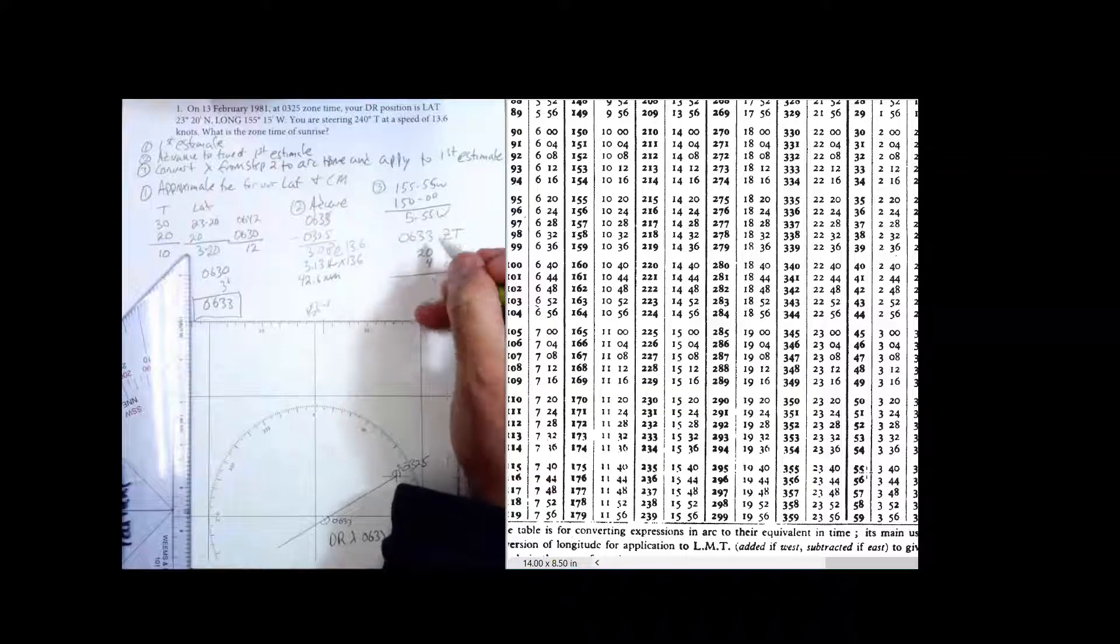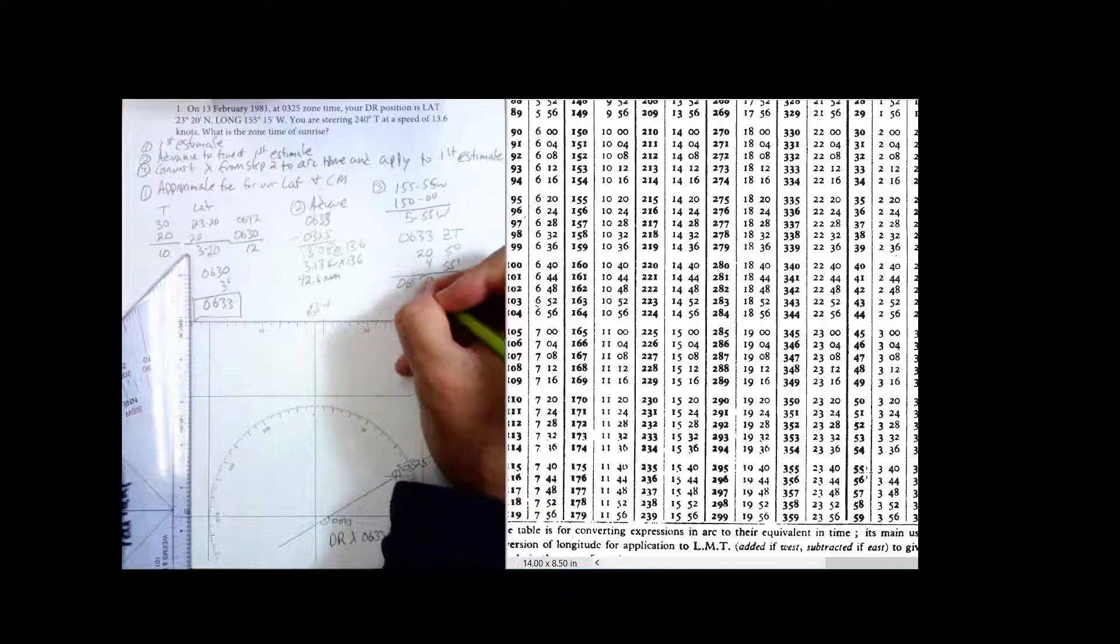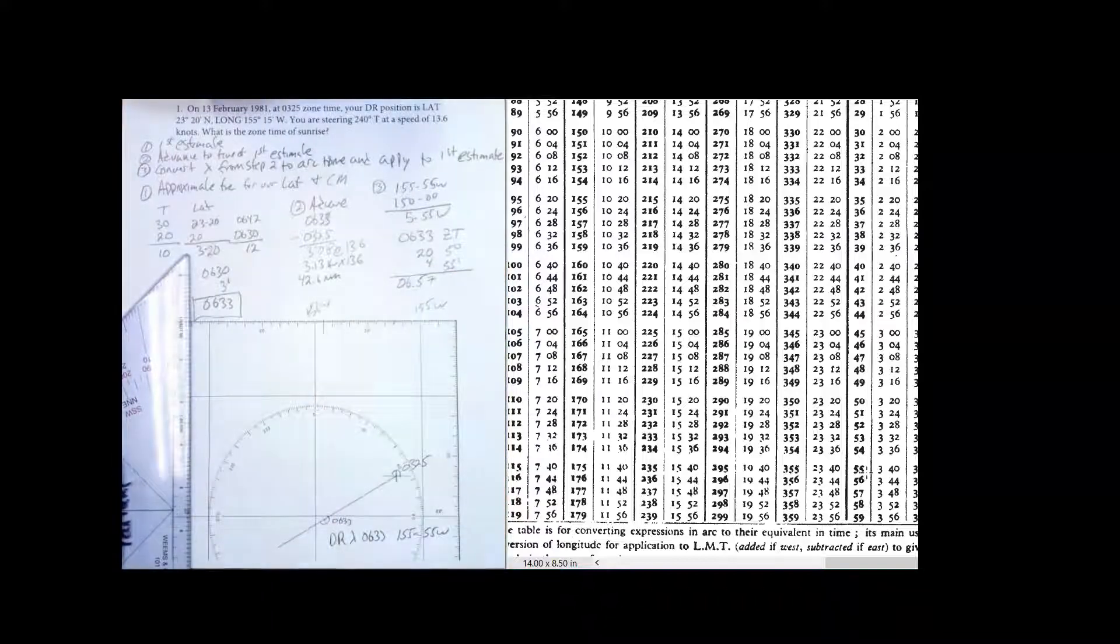Now I add all this up. Three and four is seven. Two and three is five. Oh, six. That is my estimate for the time of sunrise for this problem. That's the complete solution.